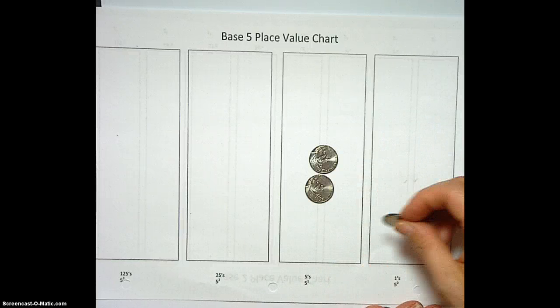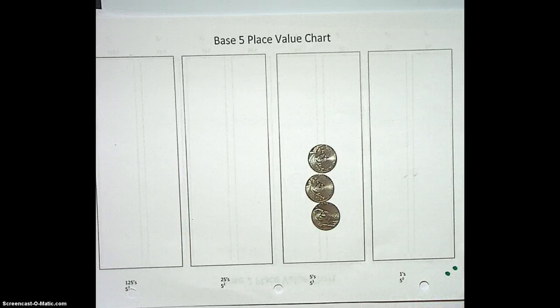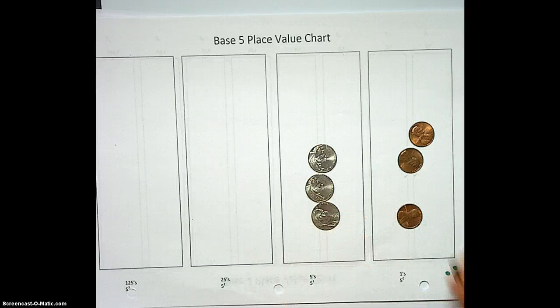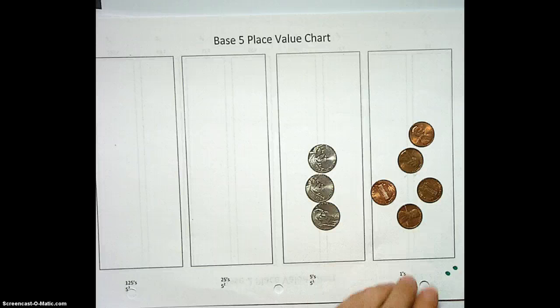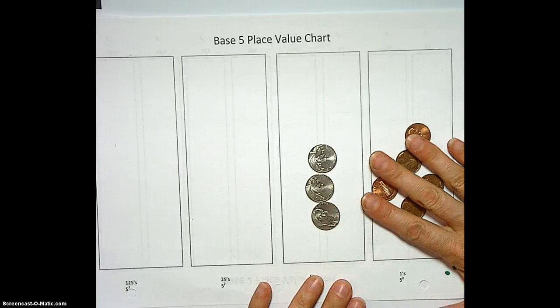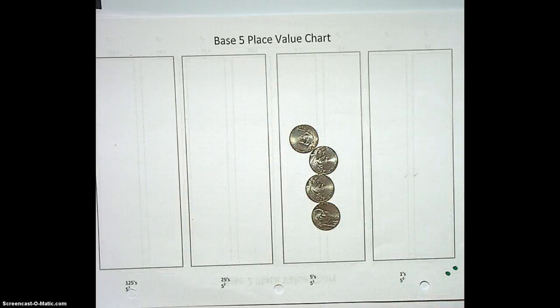And then we're going to go 3, 1, 3, 2, 3, 3, 3, 4, 4, 0. 4, 0, because we don't, again, need to carry around these pennies when we can trade it in for a nickel. So we've got 4, 0.